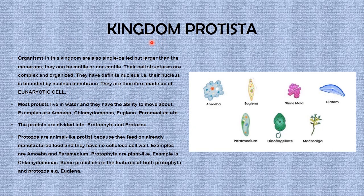Moving along, we'll be looking at kingdom Protista. Organisms in this kingdom are also single-celled but larger than the monerans. They can be motile or non-motile. Their cell structures are complex and organized. They have a definite nucleus bounded by a nuclear membrane — they are therefore made up of eukaryotic cells.